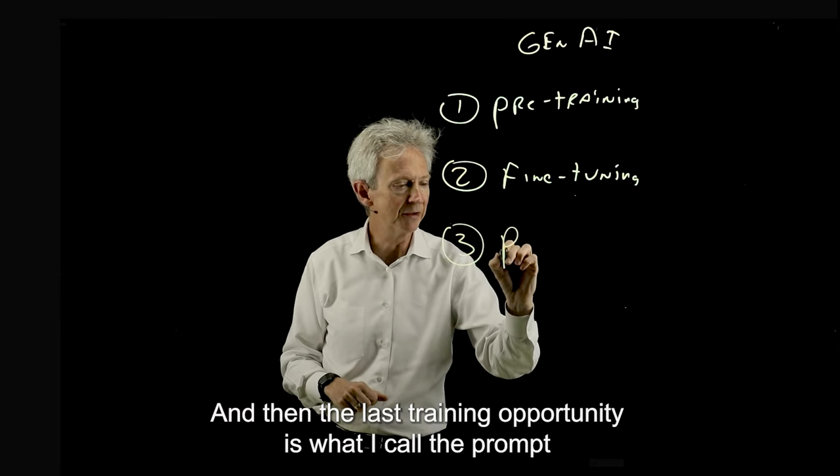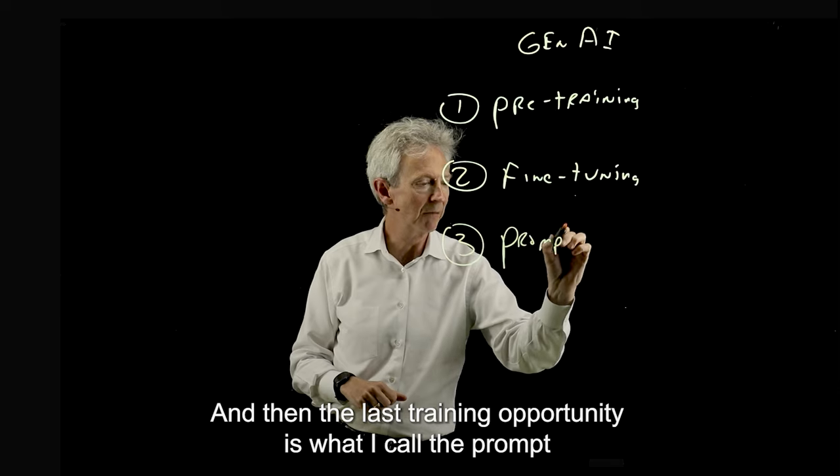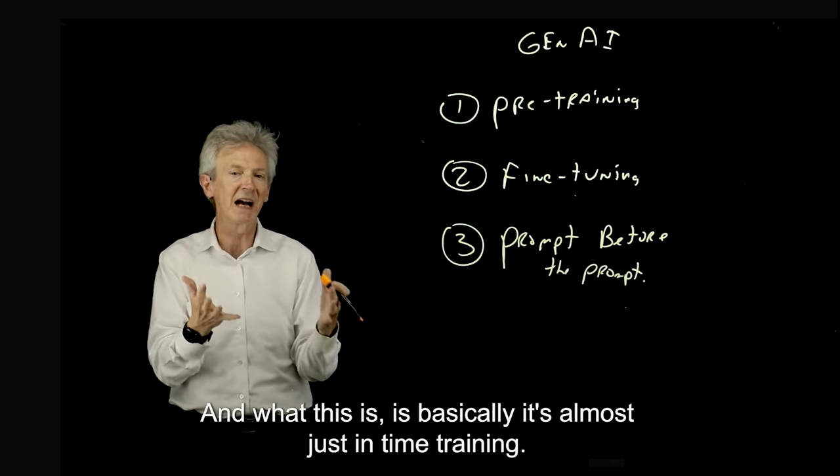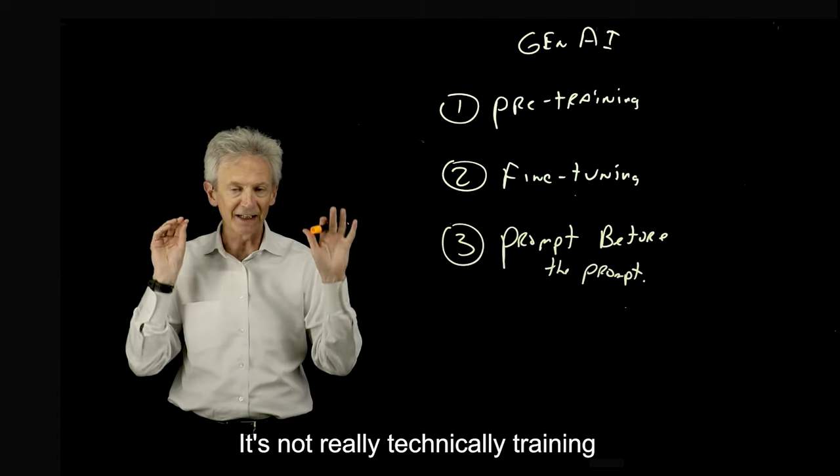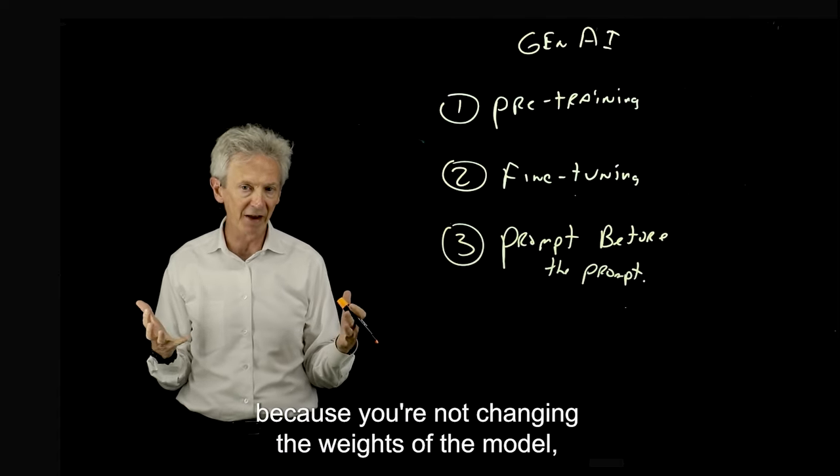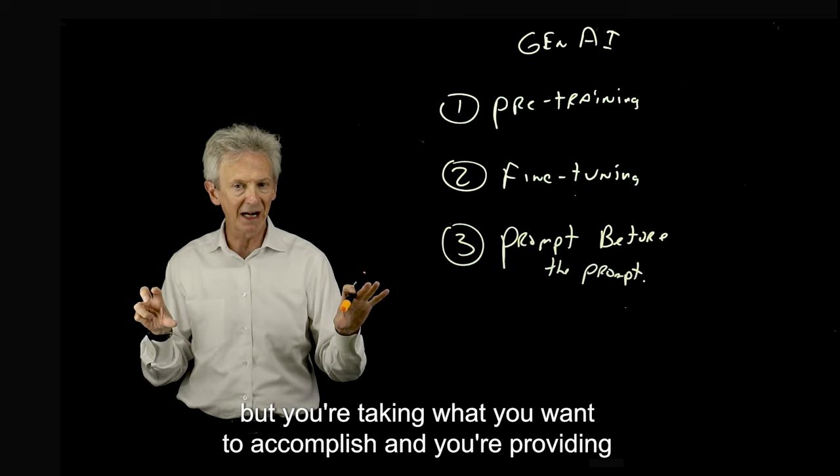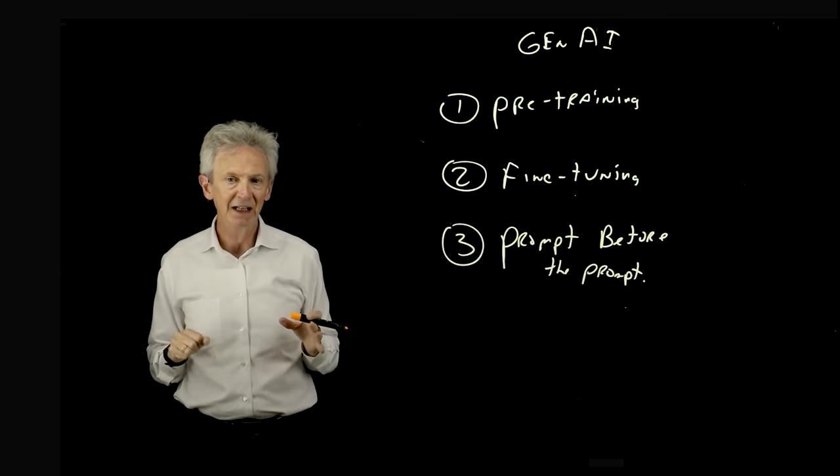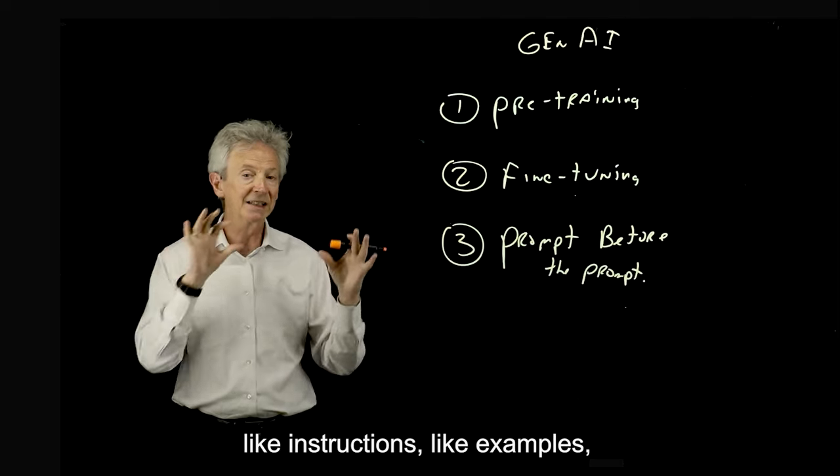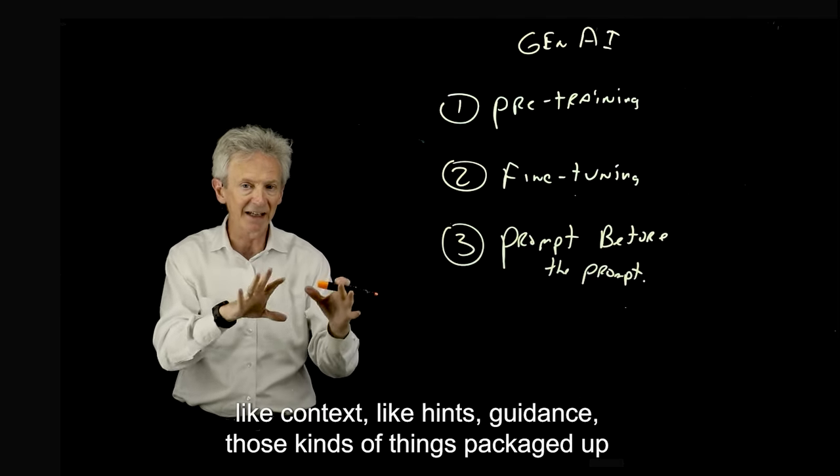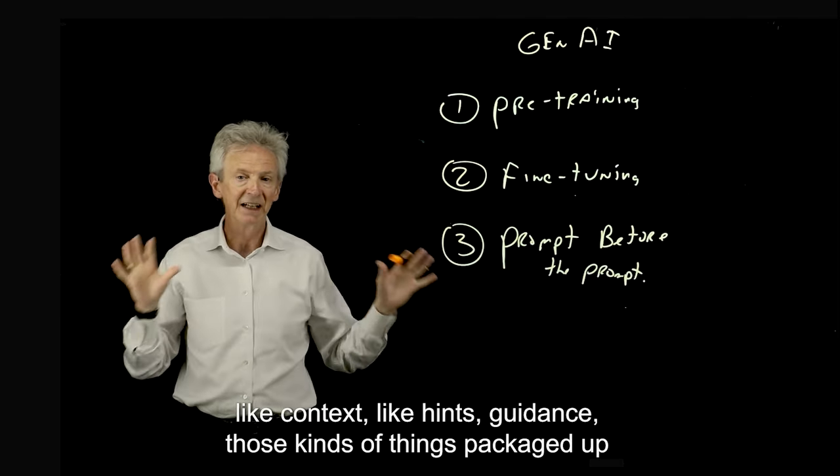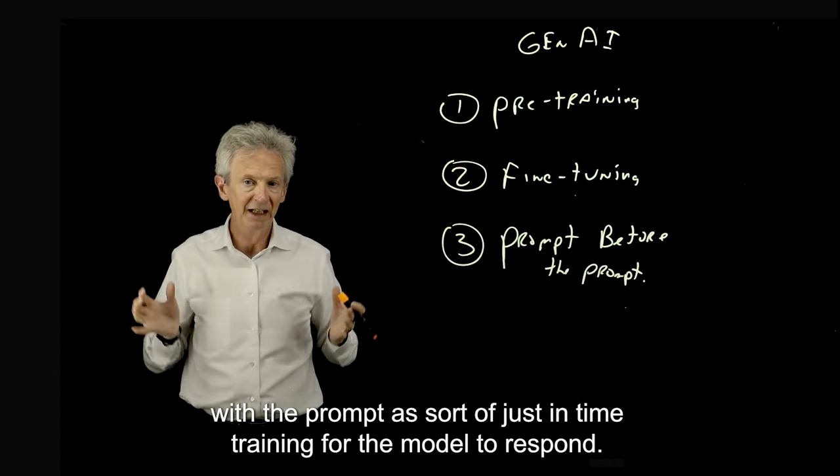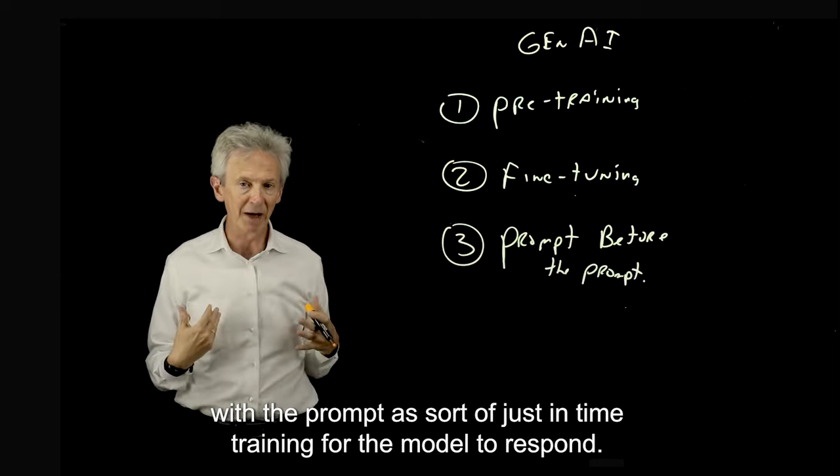And then the last training opportunity is what I call the prompt before the prompt. What this is, is basically just-in-time training. It's not really technically training because you're not changing the weights of the model, but you're taking what you want to accomplish and you're providing more information to the large language model—like instructions, examples, context, hints, guidance—those kinds of things packaged up with the prompt as sort of just-in-time training for the model to respond.